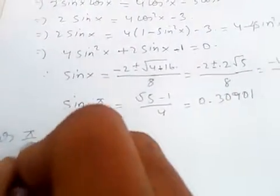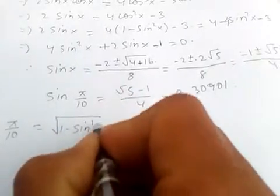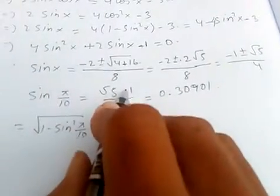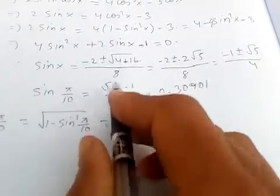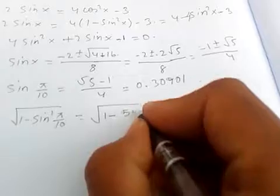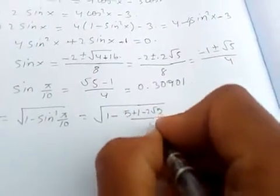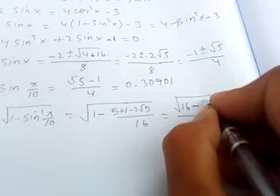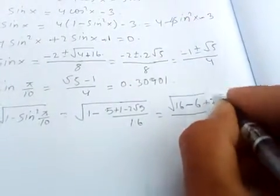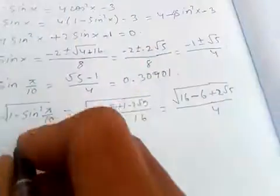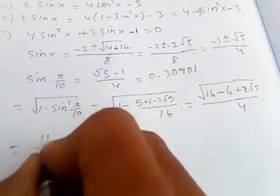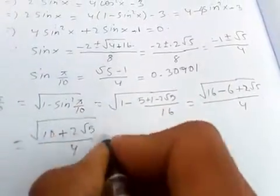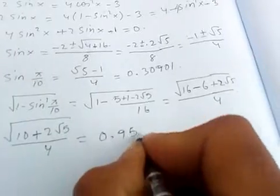For cosine pi over 10, we use cosine squared pi over 10 equals 1 minus sine squared pi over 10. Calculating this expression and simplifying, you get the square root of 10 plus 2 square root 5, all over 4, which equals approximately 0.9510.